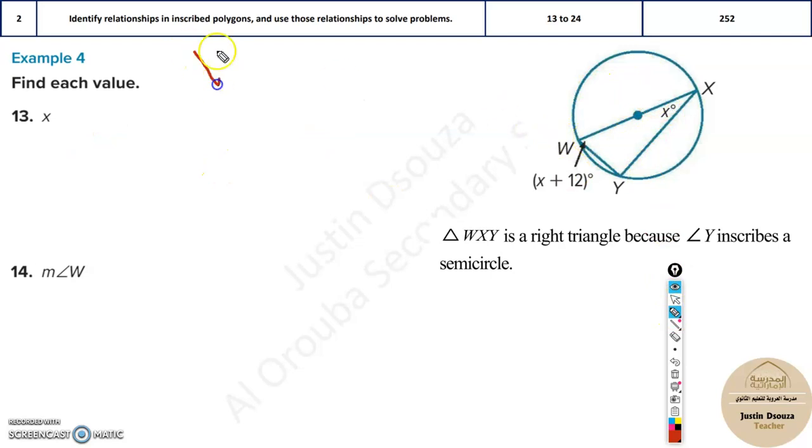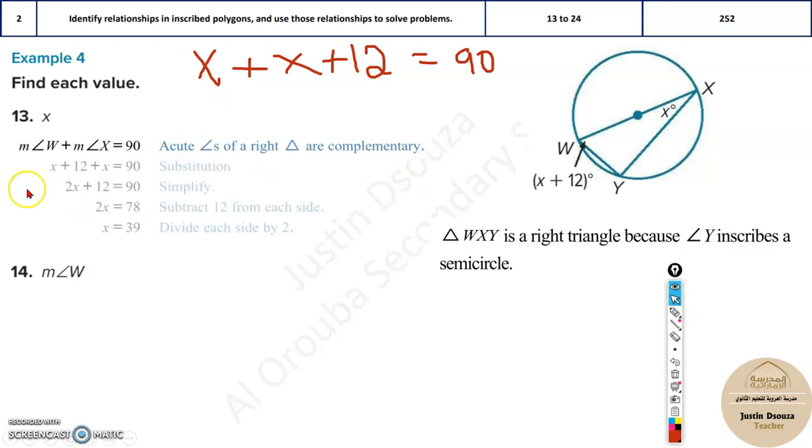Over here, x plus x plus 12 will be equal to 90. And you can easily solve this. You can solve it directly in calculator or you can just take it to the other side and solve it. However you do, you'll get the same answer. After simplifying, you'll get 39. So that is the x value.